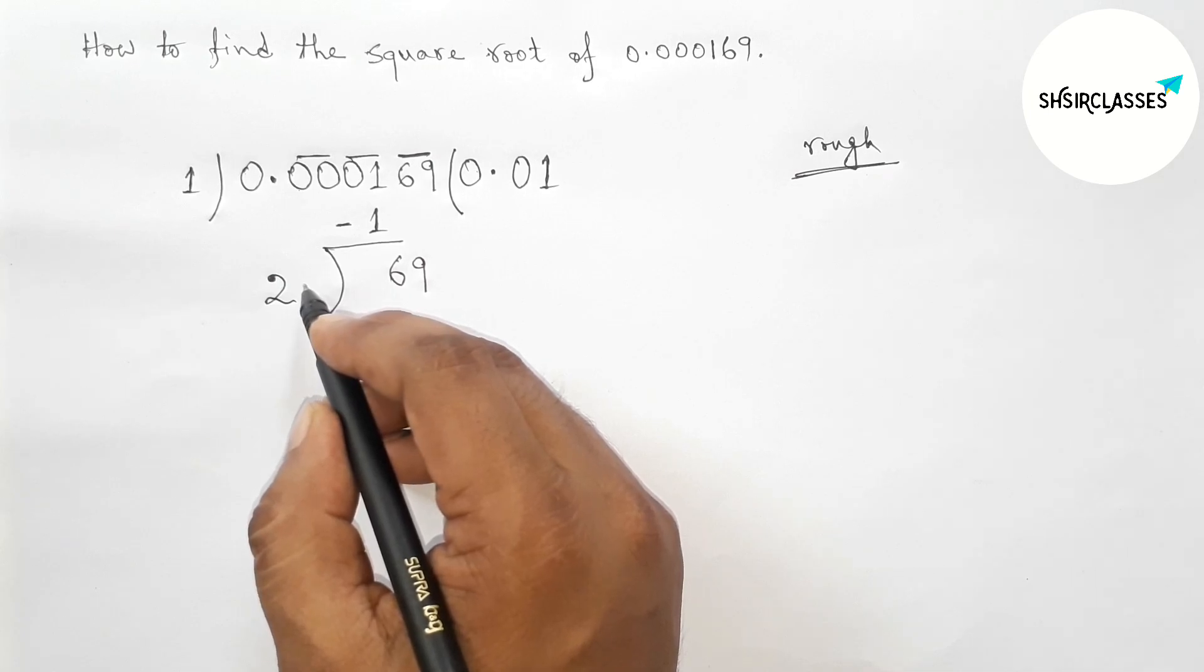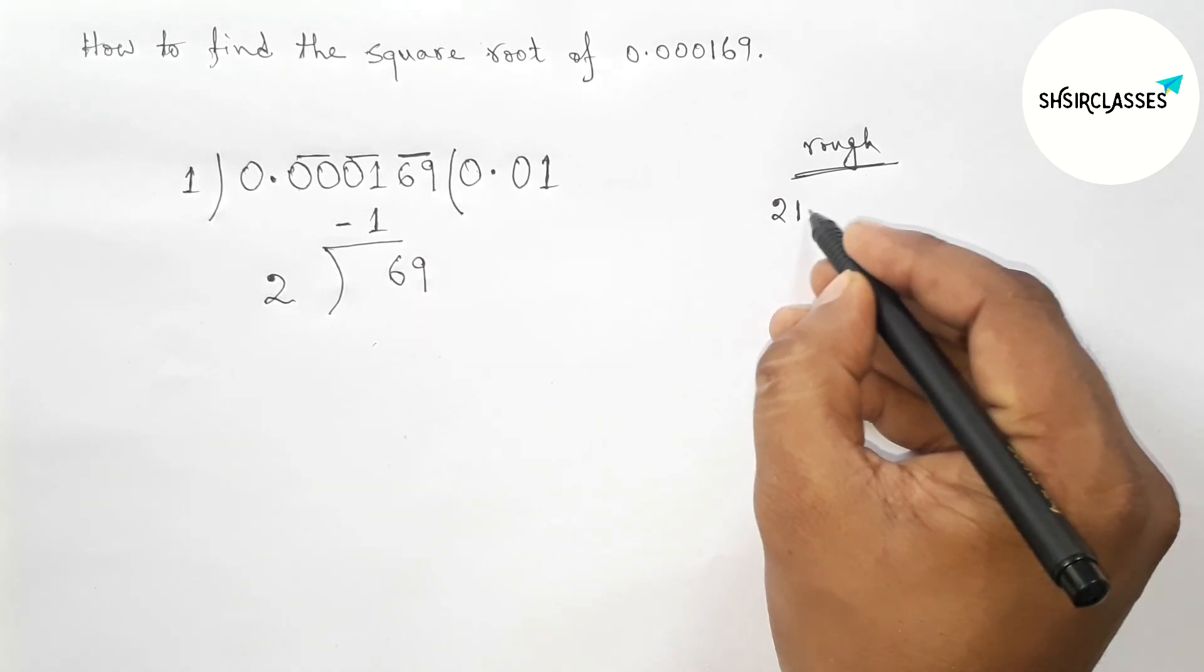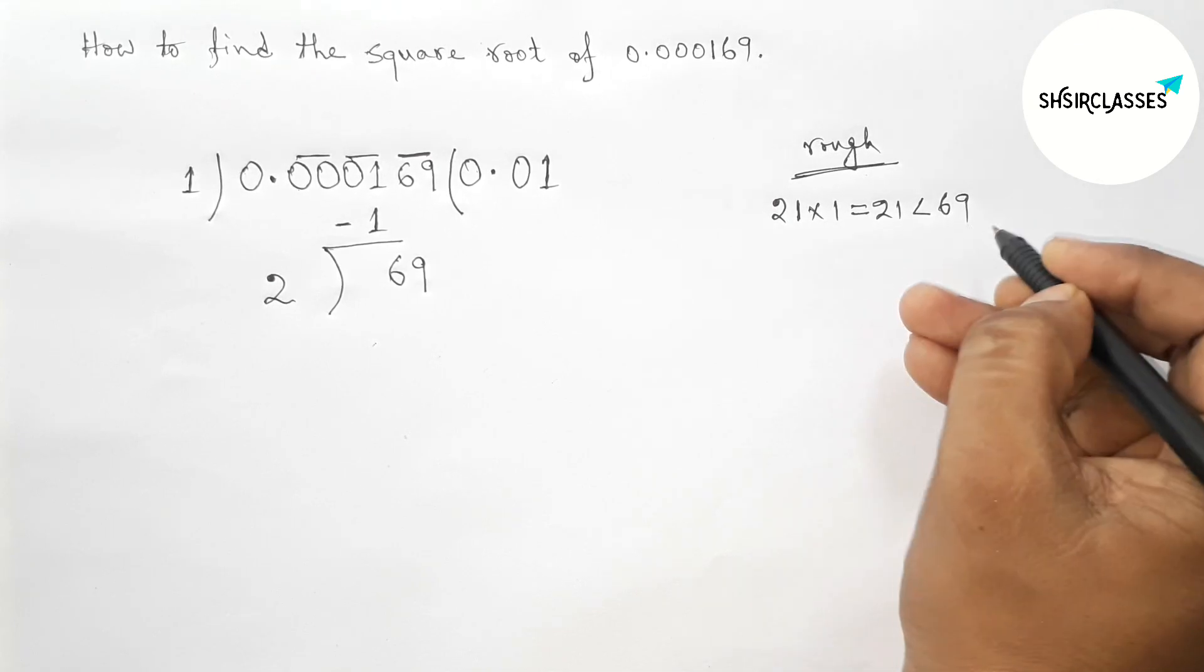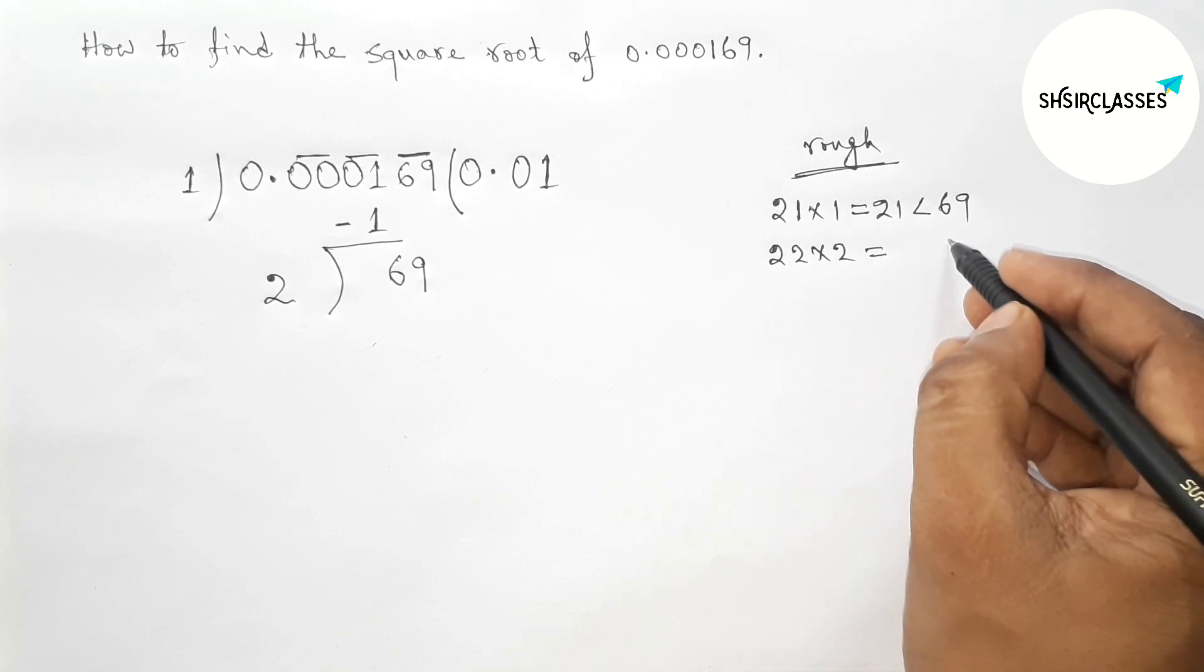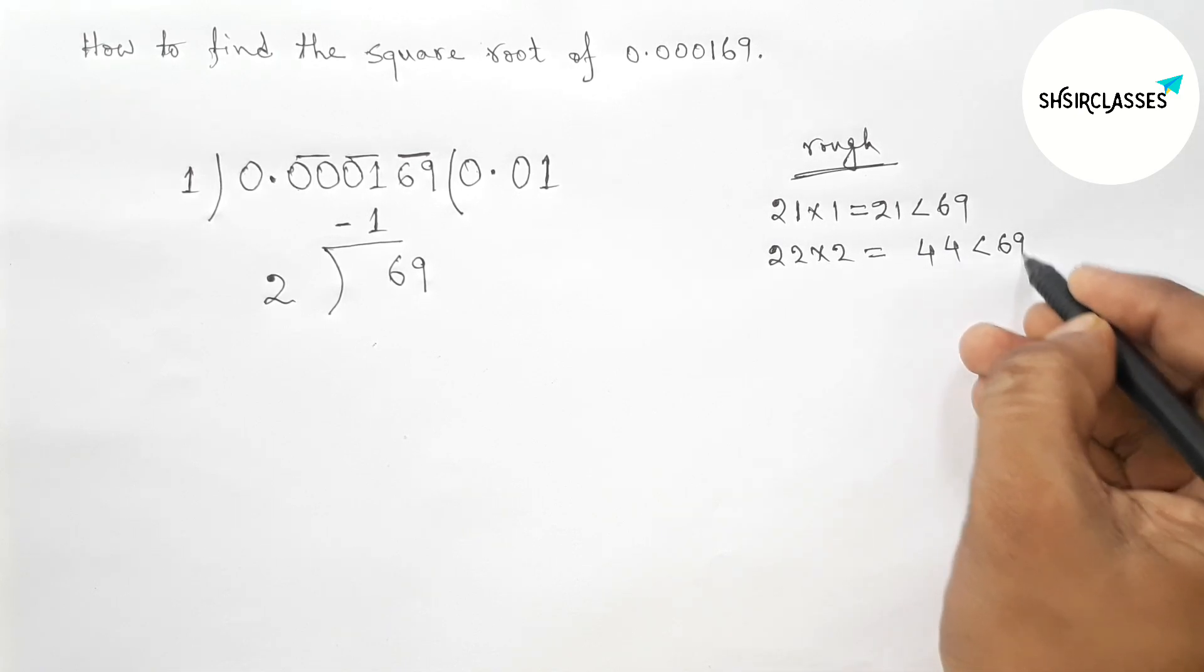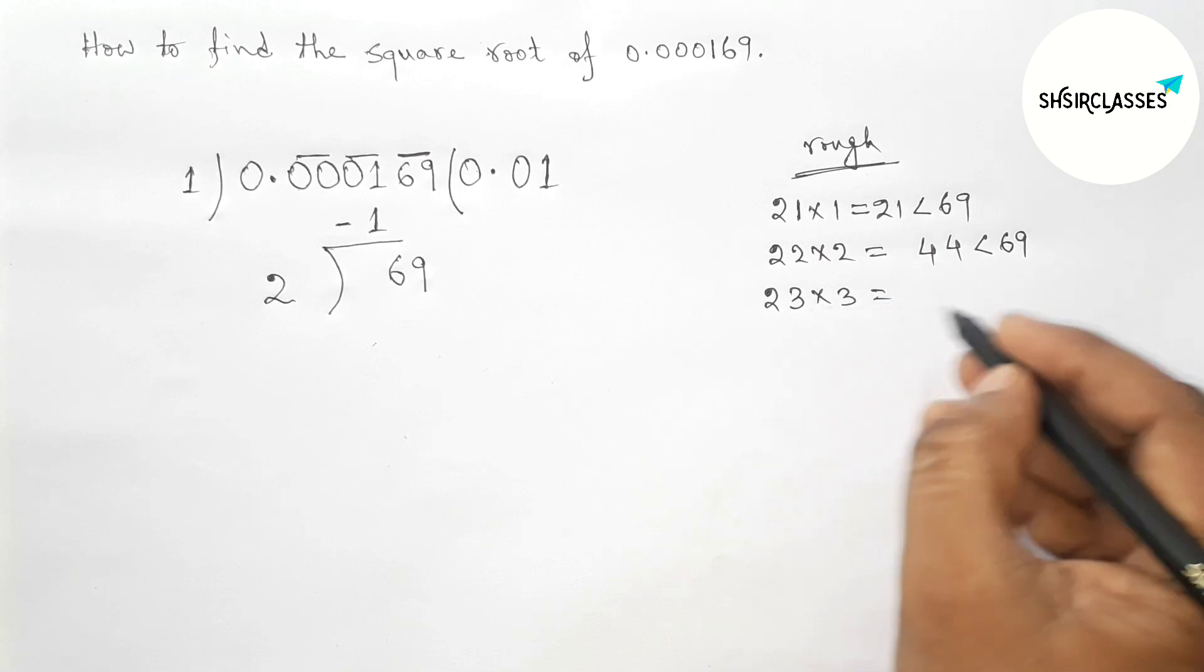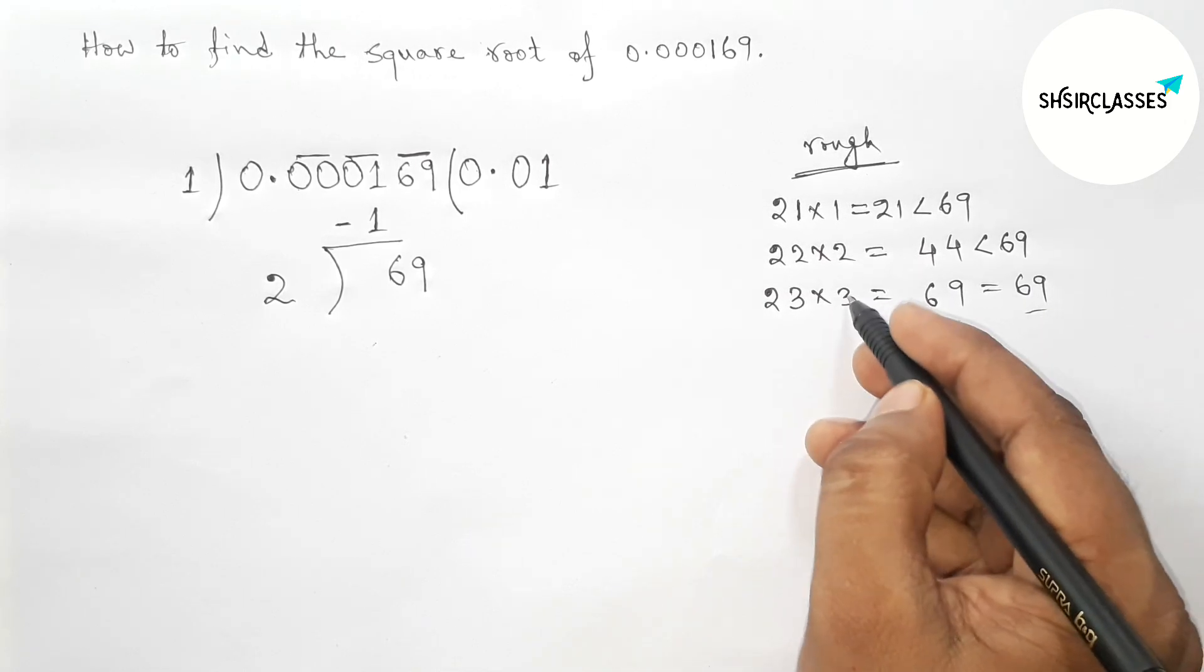We have to choose a number beside 2 and multiply by that number which is less than or equal to 69. First taking 1 and multiplying by 1, which is less than 69. Now taking 2 and multiplying by 2, so 44, which is less than 69. Now taking 3 and checking, so 23 times 3 equals 69, which equals 69.